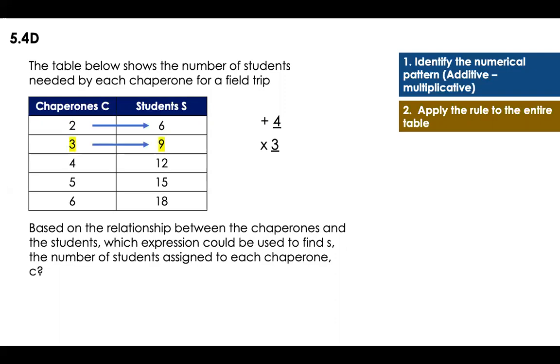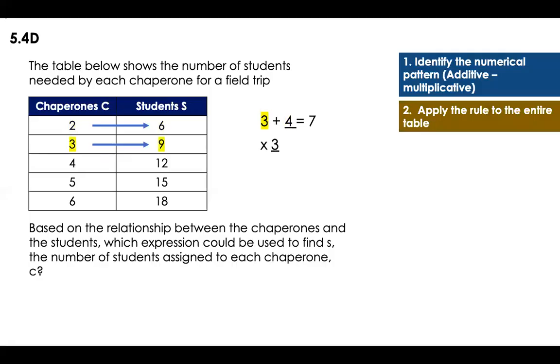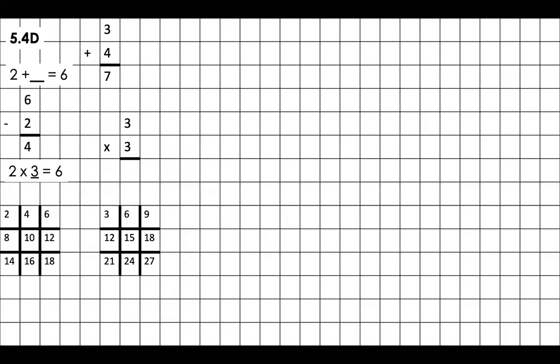Well, I have to apply the rule to the entire table. So let's start with the addition that is easiest. Three to get to nine. Can I add four? Three plus four is equal to seven. That's not nine. So that one is not.